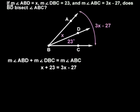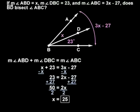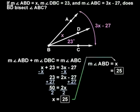Solving from here, we find that x equals 25, so the measure of angle ABD is 25 degrees. Since angle ABD measures 25 degrees and angle DBC measures 23 degrees,